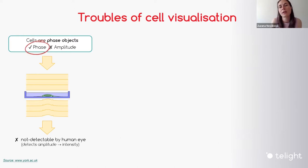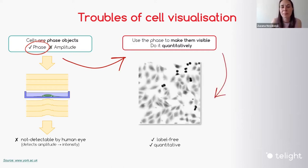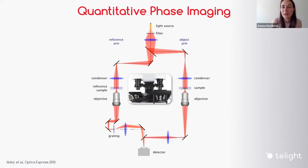But what if we use the phase of the light for cell visualization? Not talking about phase contrast methods, but what if you would like to do it quantitatively and ended up with such a nice image without using any labels? That would be nice. And that's the technology — quantitative phase imaging.